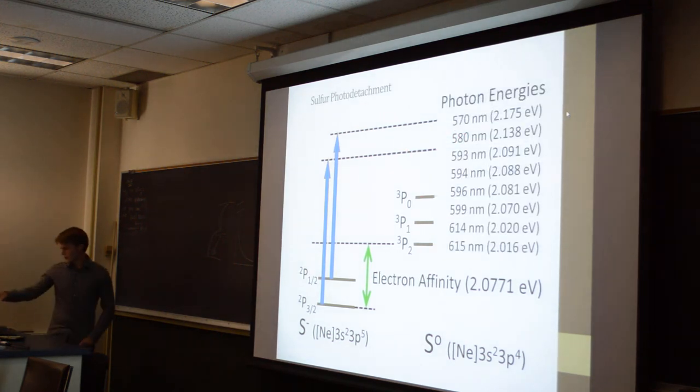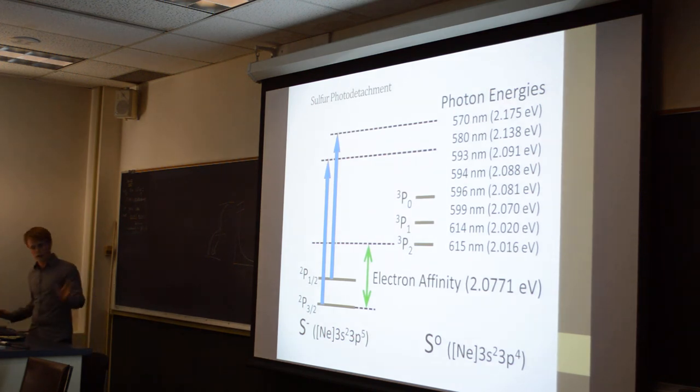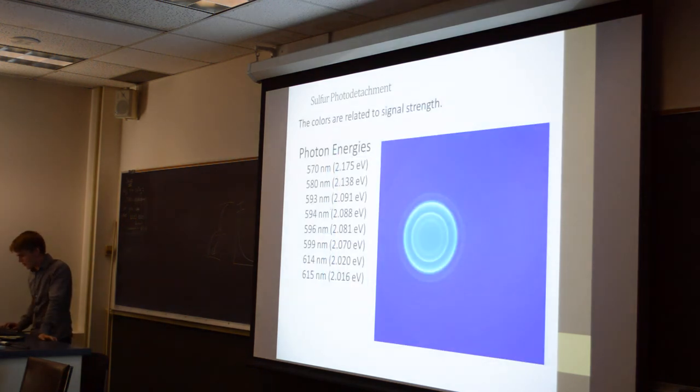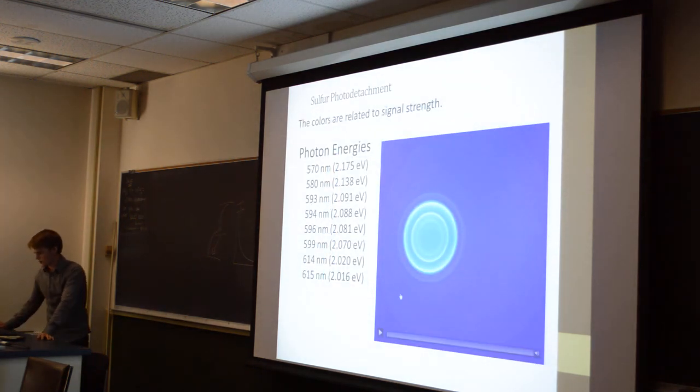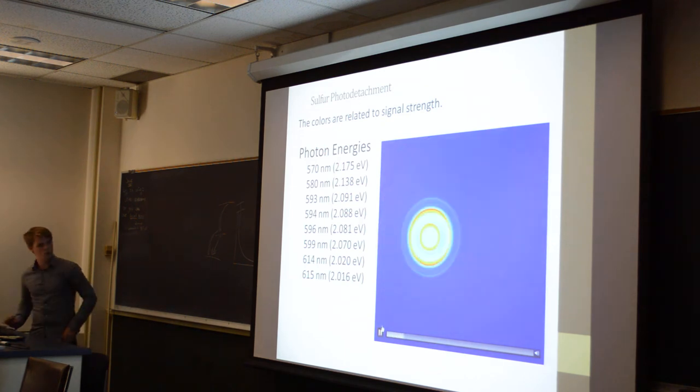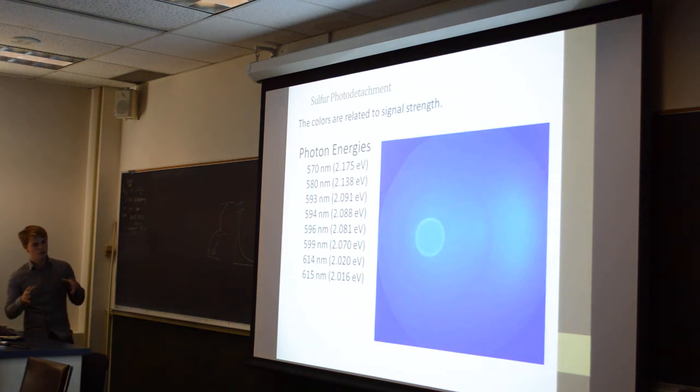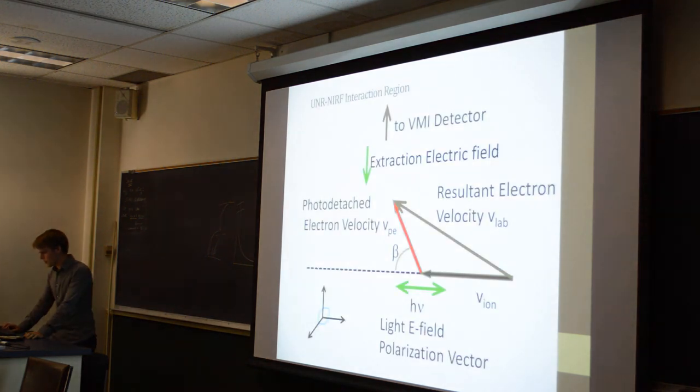And this is some of the actual photon energies that we used to measure. So at lower photon energies, we should start seeing less and less possible transitions because they're energetically not allowed. So what we're seeing is just an illustration of fewer and fewer energetically allowed transitions at the different photon energies.